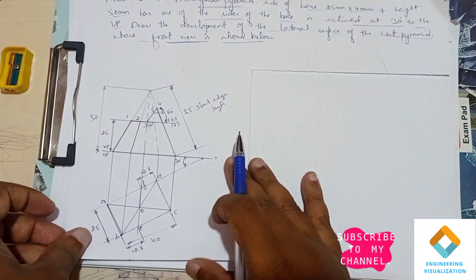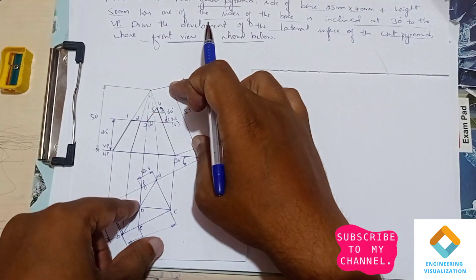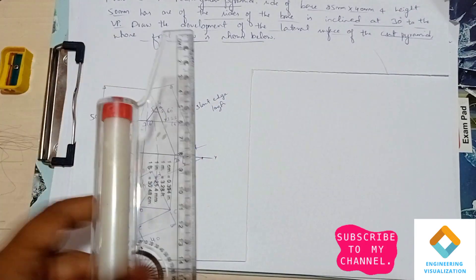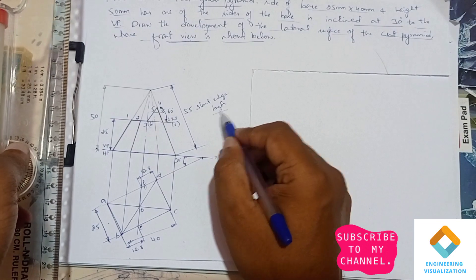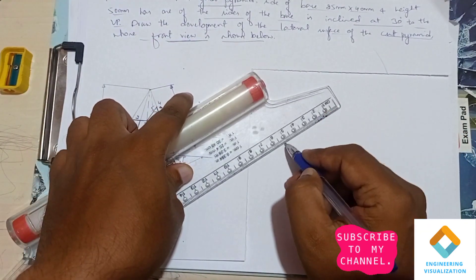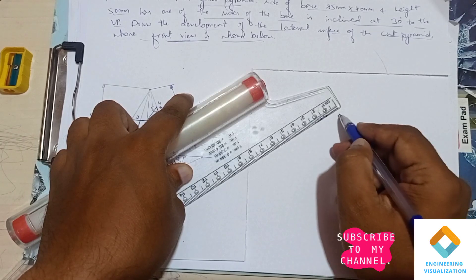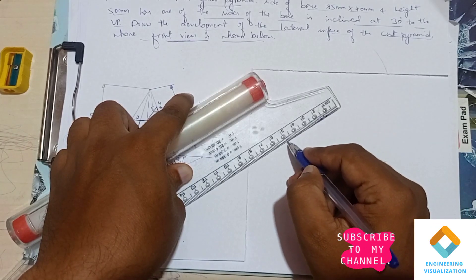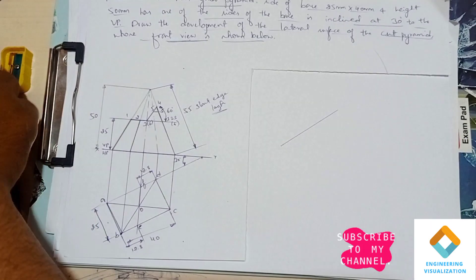Here you can see they will be giving the front view. Using this top and front view, we have to draw the development. Looking at the top and front view, we have to construct the development. First, I will be constructing the slanted length.